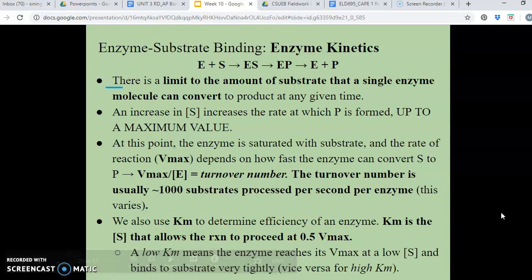What is Km? So Km is the concentration of the substrate that will allow the reaction to proceed at half of its Vmax. So a low Km means that the enzyme reaches its Vmax at a very low concentration of substrate. And so therefore, that would indicate that the enzyme can bind to the substrate very, very tightly. And then of course, vice versa would happen for a high Km.